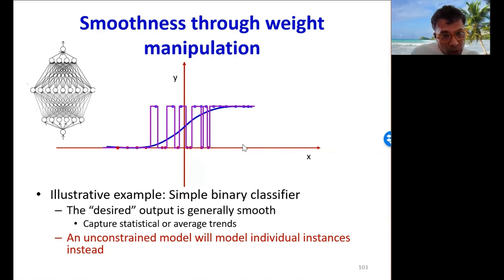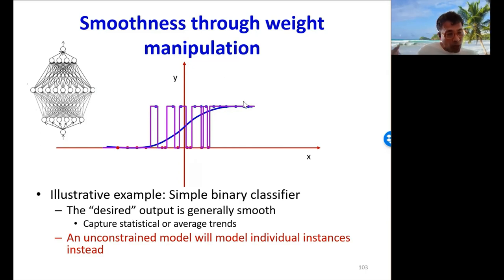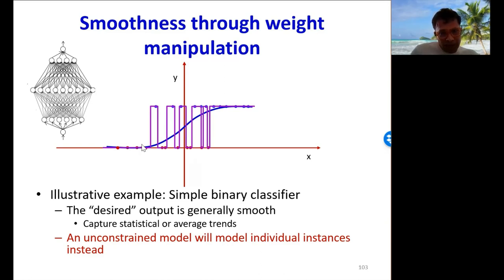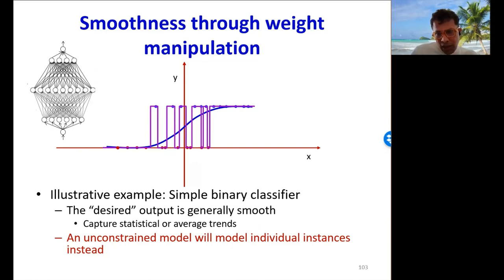If asked which of the two curves — the blue or the purple — you want the network to learn, you'd clearly prefer the blue curve, in the sense that it captures the a posteriori probability of class 1 given the input. But simply training this network does not prevent it from learning the purple curve instead, because the loss function simply tries to maximize the fit at the training instances.